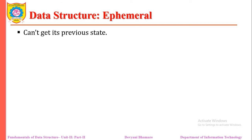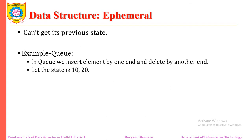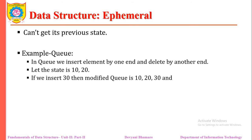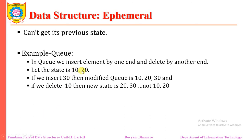In an ephemeral data structure, we do not get the previous state back. Take the example of a queue initially containing 10 and 20. Insertion is from the rear end, so element 30 is added after 20. When we delete, 10 is removed from the front, giving a new state of 20 and 30. The previous state was 10 and 20, and the new state 20 and 30 are not the same — that is why queue is called an ephemeral data structure.